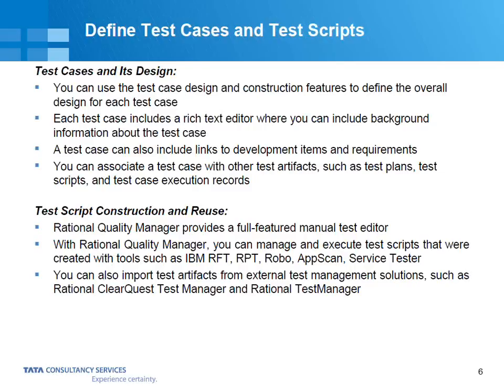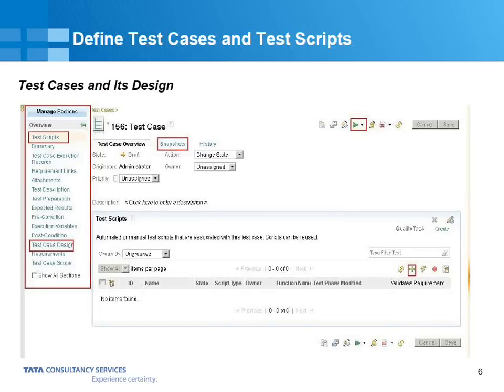You can have scripts generated in that automation tool and pull all those scripts into RQM, and also attach those scripts to test cases. Whenever you trigger your execution, you execute your automation testing and the target machine should have that particular tool installed. You can also import test artifacts from external test management solutions like legacy tools such as ClearQuest, Rational Test Manager — you can export those artifacts and import them into RQM if you are planning to move to the newer version of the test management tool.